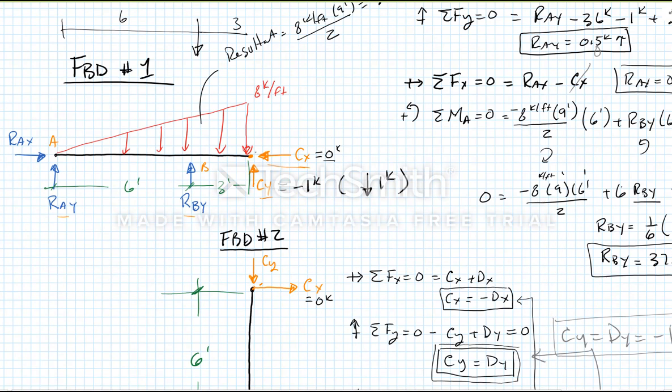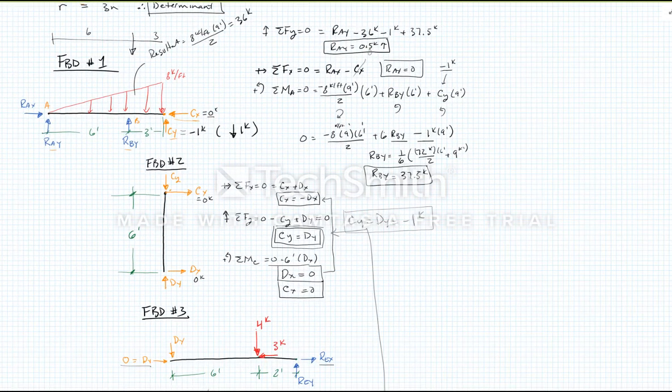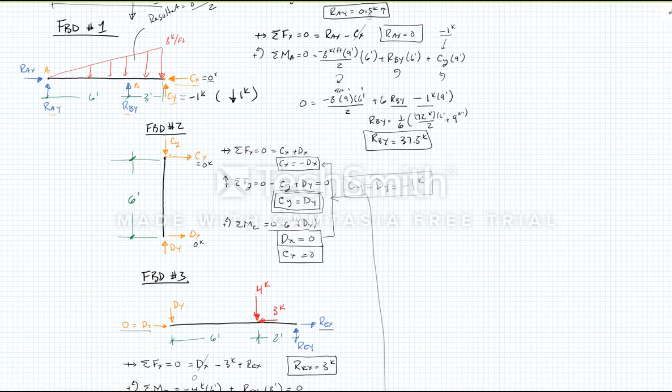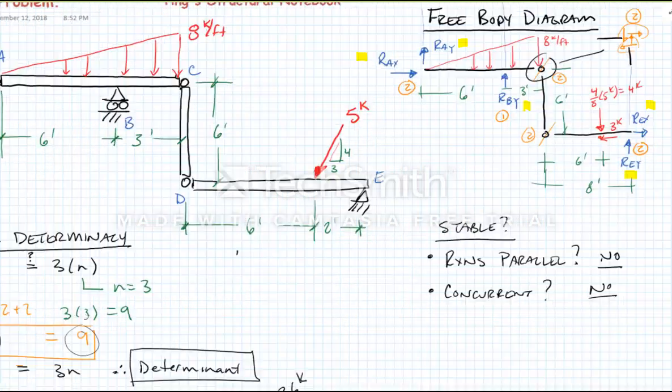And then we started to break down our structure. At a pin connection we only get two forces being transmitted, horizontal and vertical. So we applied them equal and opposite at each joint. And at this point we were solving three separate free body diagrams. And as we identified the different values, we would back substitute in. And we've solved for all our problems. Thank you.